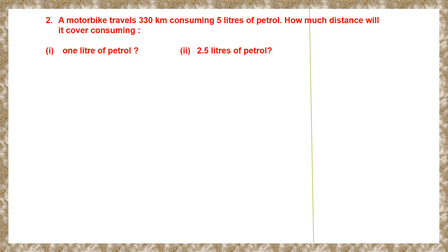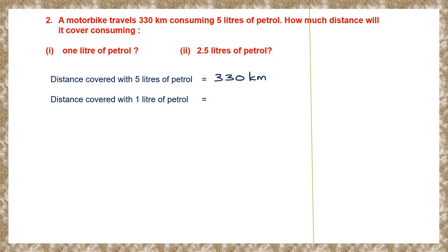Question 2. A motorbike travels 330 kilometers consuming 5 liters of petrol. How much distance will it cover consuming first 1 liter of petrol and then 2.5 liters of petrol? So, let's start. Distance covered with 5 liters of petrol is 330 kilometers. Now, we need to find the distance covered with 1 liter of petrol, which will be 330 kilometers divided by 5 liters.